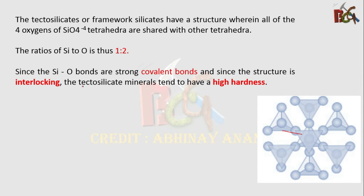In tectosilicate structure, all four oxygens are shared with another tetrahedra. Suppose this is a tetrahedra which has four oxygens, and all four oxygens are shared with another tetrahedra.